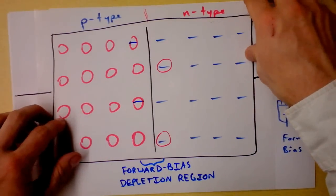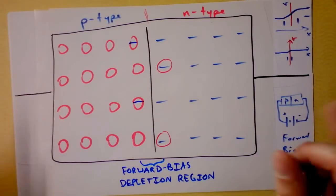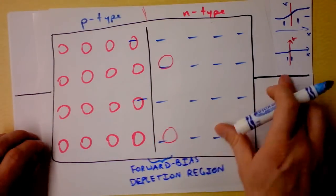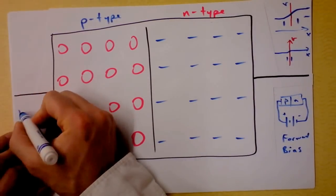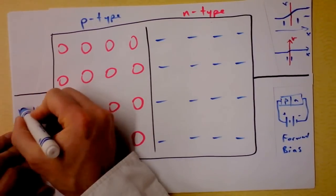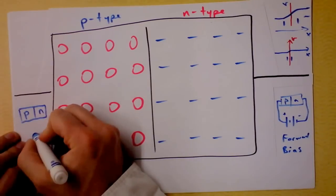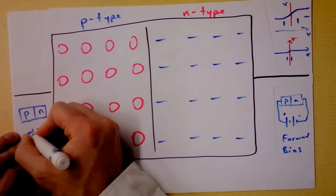On the flippy flippy though, what if we hook up a reverse bias? Let me draw you a little sketch of what that would look like. I'd have P and N and I'd just put the battery the other direction.